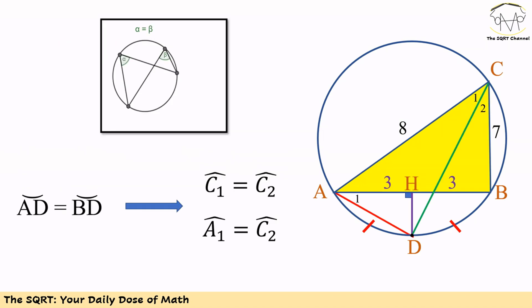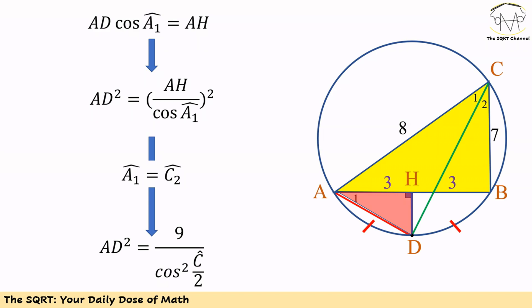Now let's connect C to D. We know that angles C2 and A1 are subtended by the same chord, so they are equal. We also know that C1 equals C2 because we have two equal chords AD and BD. Remember, we want to find the value for segment AD.